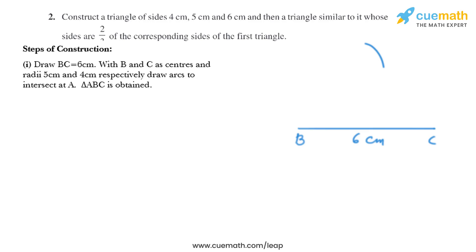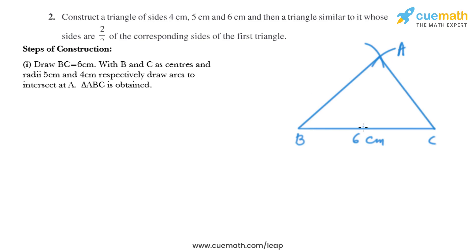We name this point of intersection as A. Then we join A to B and A to C, and we have got triangle ABC.